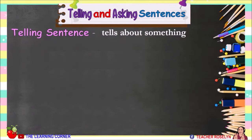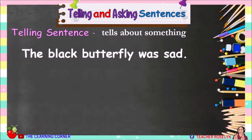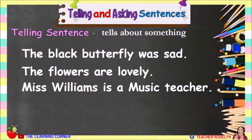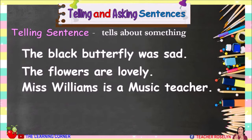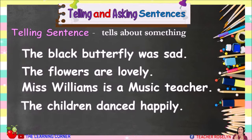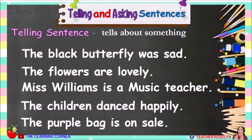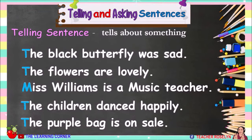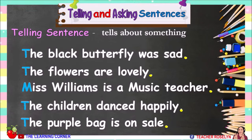For example: The black butterfly was sad. The flowers are lovely. Miss Williams is a music teacher. The children danced happily. The purple bag is on sale. These are all telling sentences. They all begin with capital letters and end with a period, and they all tell about something.